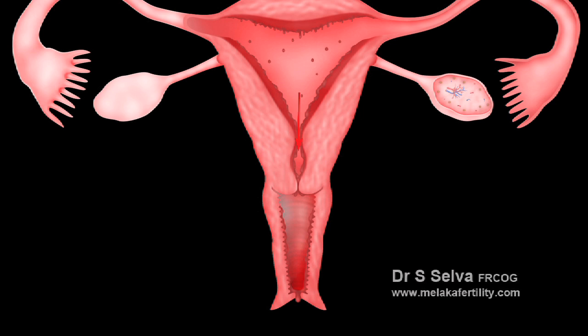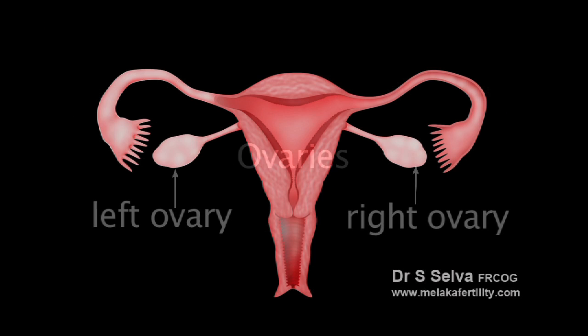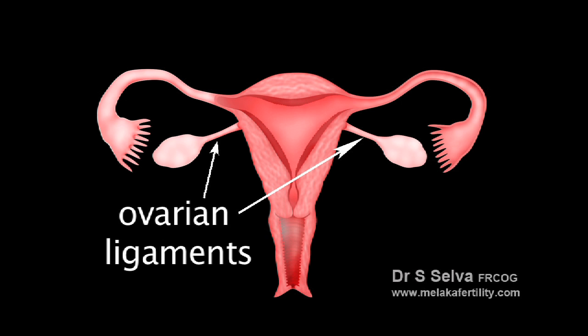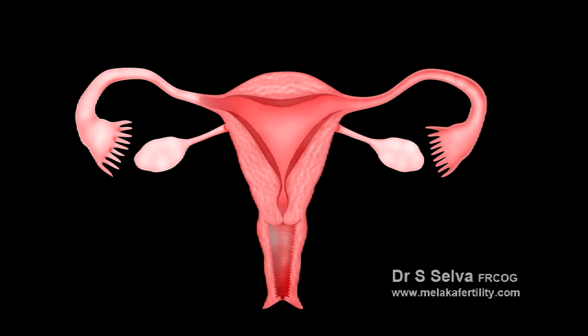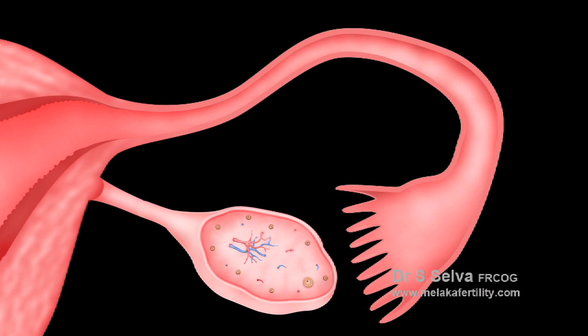During menstruation, the vagina provides a channel for menstrual fluid to flow out of the body. The ovaries are small, oval-shaped, paired glands that are attached to each side of the uterus via a thin fibrous ovarian ligament. The pair is responsible for storing and nurturing immature egg cells to become mature eggs.